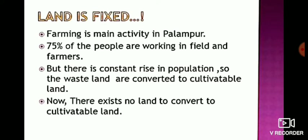Land is fixed. Farming is the main activity in Palampur — 75% of people are working in the fields. But there is a constant rise in population, so waste land was converted to cultivated land to supply more crops. Now there is no more land left to convert to cultivated land. So land is fixed.